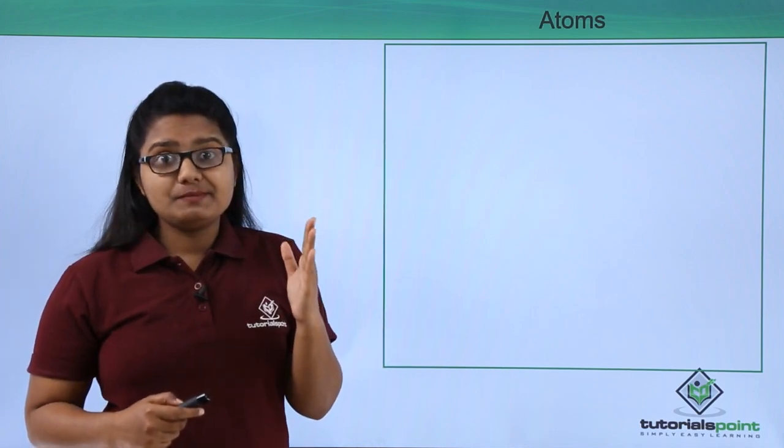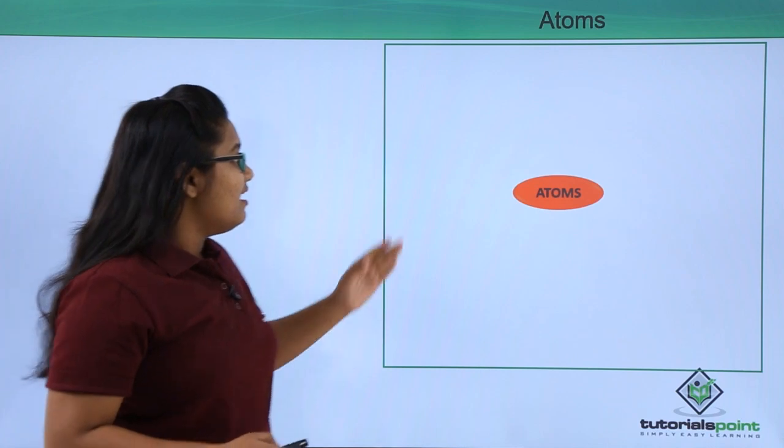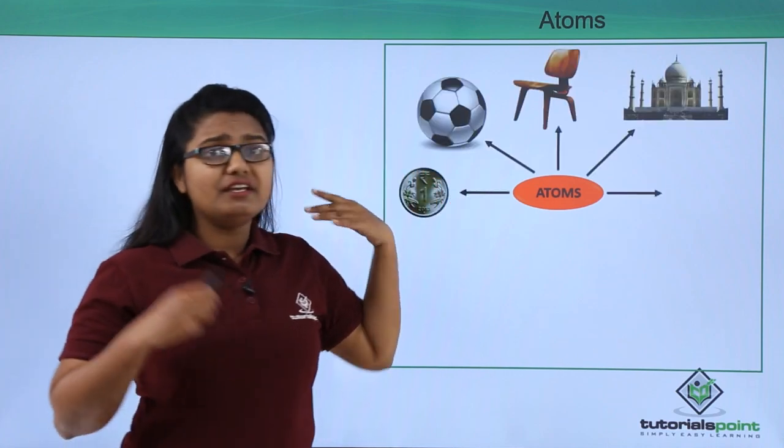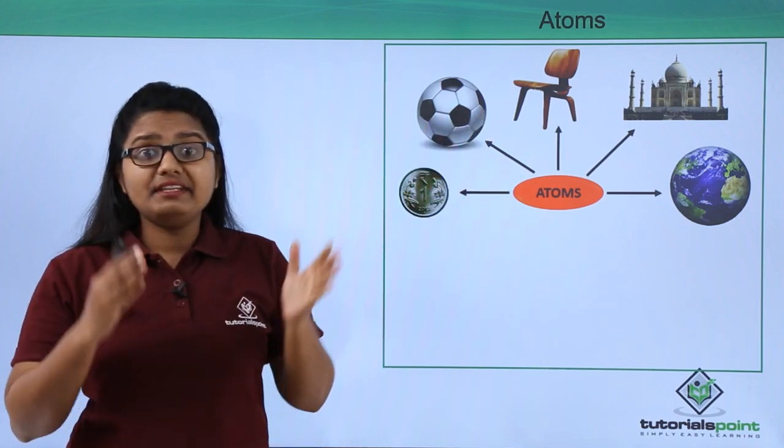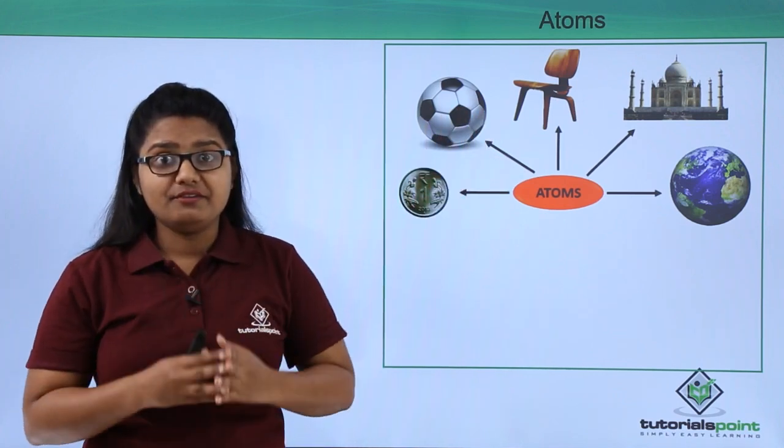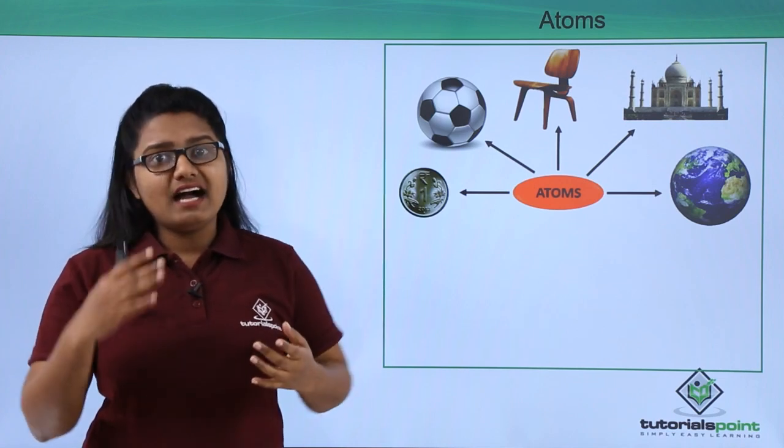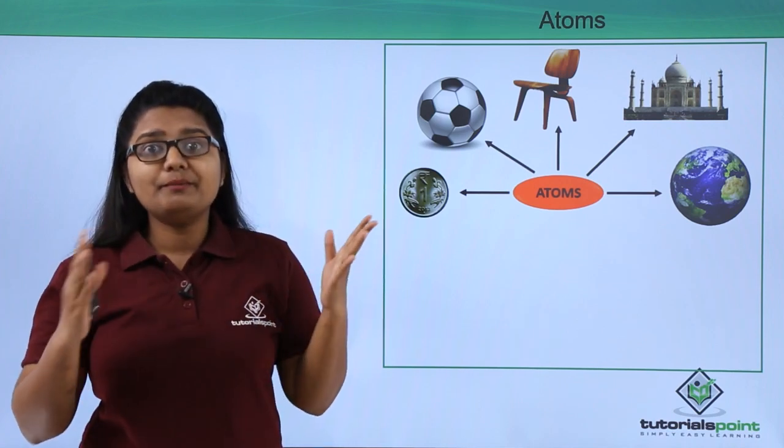I said everything is made up of atoms, which means starting from a small coin to football, chair, even huge things like Taj Mahal and even the earth itself where we live is made up of atoms. In fact, the sun, stars, and other planets are also made up of atoms.